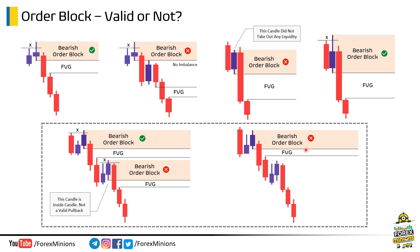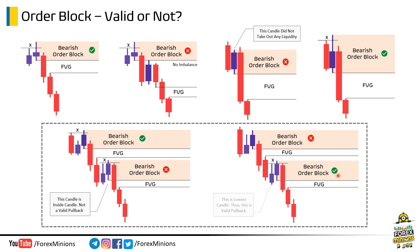This is another bearish order block — is it valid? Applying our rules: this candle took out the liquidity of the previous high, and market created this price imbalance — a fair value gap zone. And this is a valid order block because this is a valid pullback.